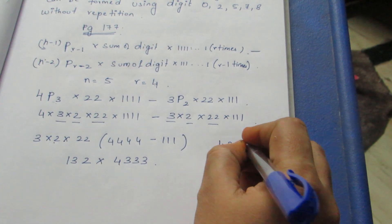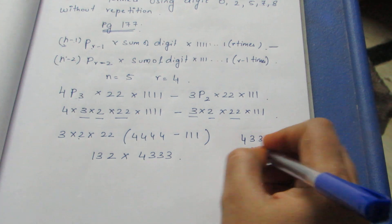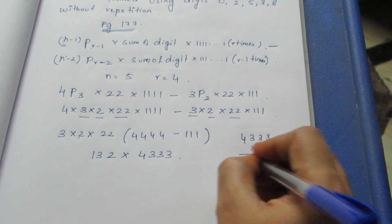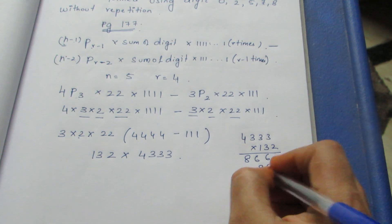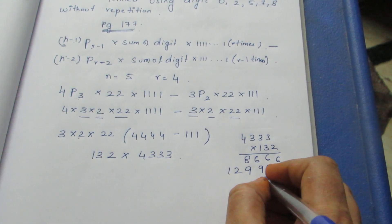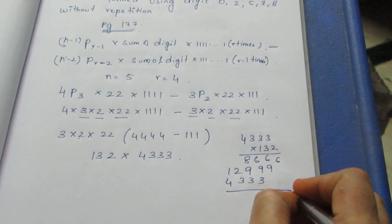4333 into 132. 3 twos are 6, 3 twos are 6, 3 twos are 6, 4 twos are 8, 3 threes are 9, 3 threes are 9, 4 threes are 12. Add them: 6, 15, 16.